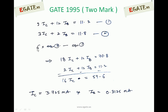With two equations and two unknowns, we solve: multiply equation 2 by 6 and subtract equation 1. This gives 18IC + 12IB minus (2IC + 12IB) = 70.8 minus 11.2, resulting in 16IC = 59.6, so IC = 3.725 mA. Substituting back into one equation gives IB = 0.3125 mA.